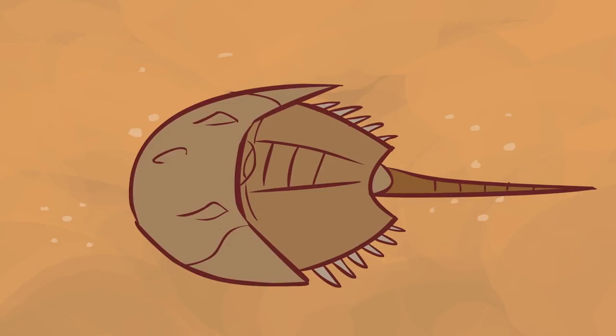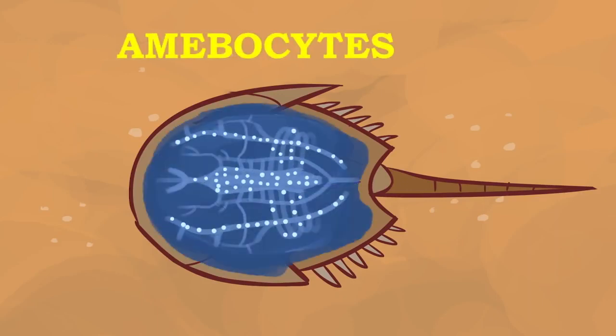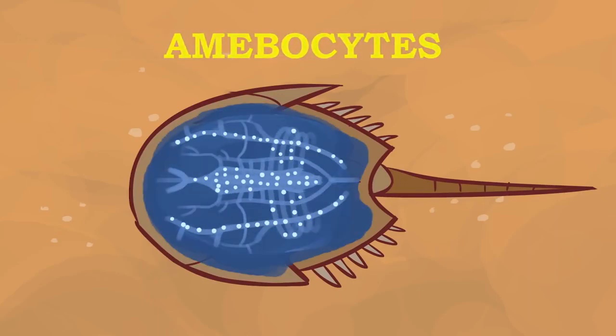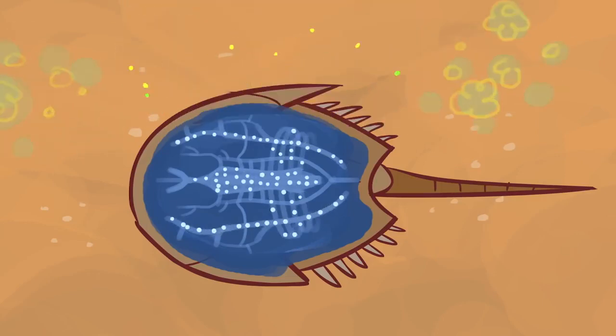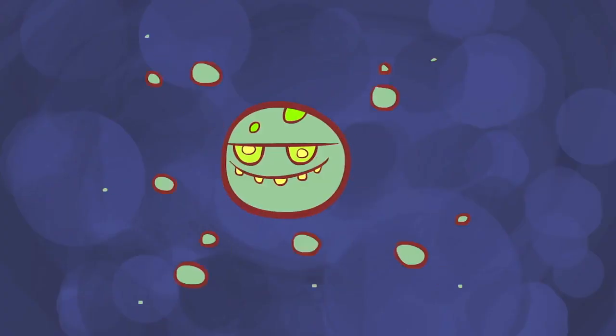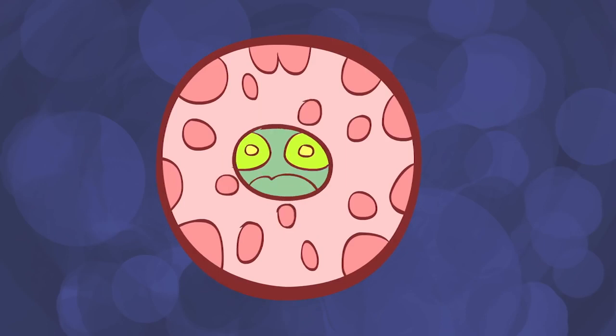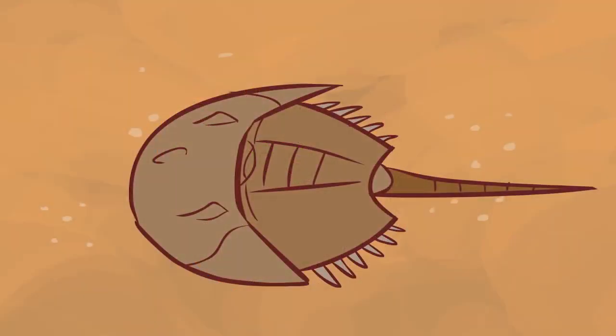Horseshoe crab blood contains cells called amebocytes that protect them from infection by viruses, fungi, and bacteria. Amebocytes form gels around these invaders to prevent them from spreading infections. This isn't unusual. All animals have protective immune systems.